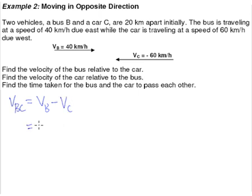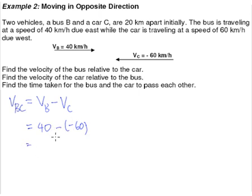The velocity of the bus is 40 kilometers per hour, while the car is negative 60 kilometers per hour. Now, when you minus a negative number, it becomes a plus. So that's how we get 40 plus 60, which gives us 100 kilometers per hour.